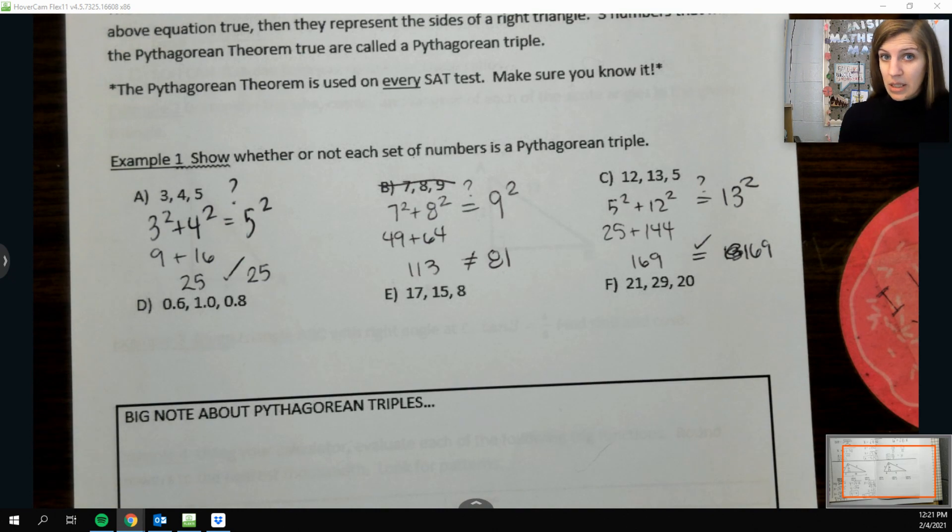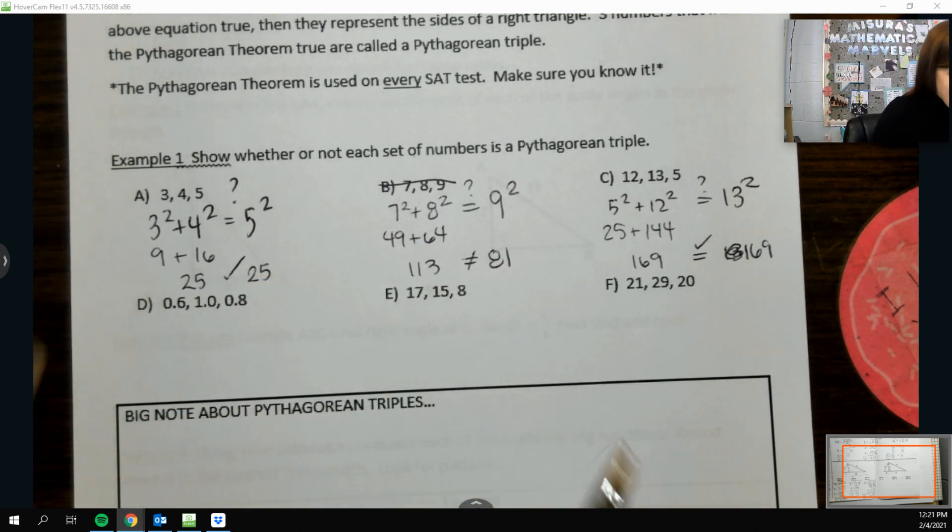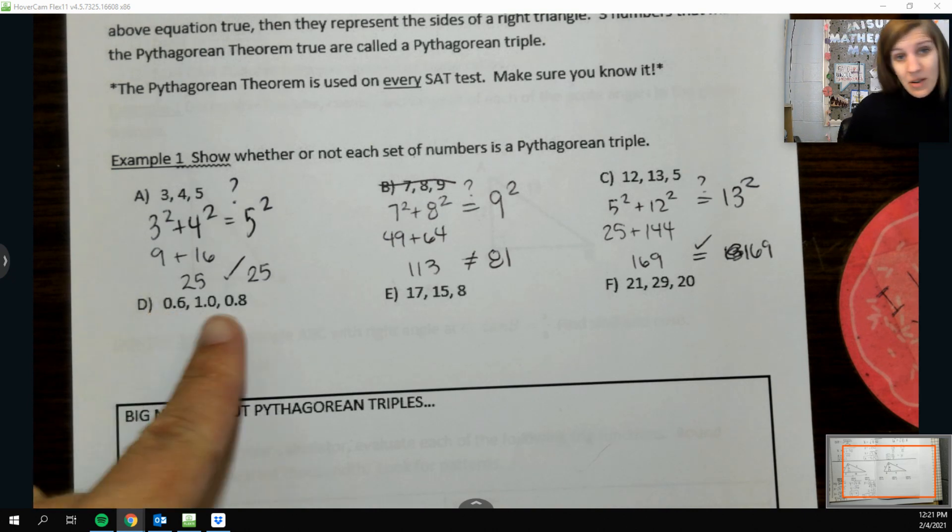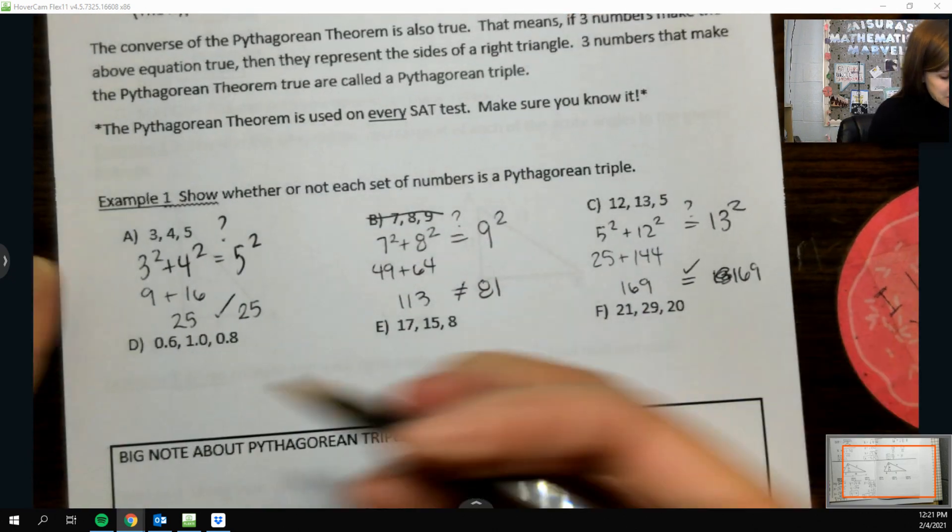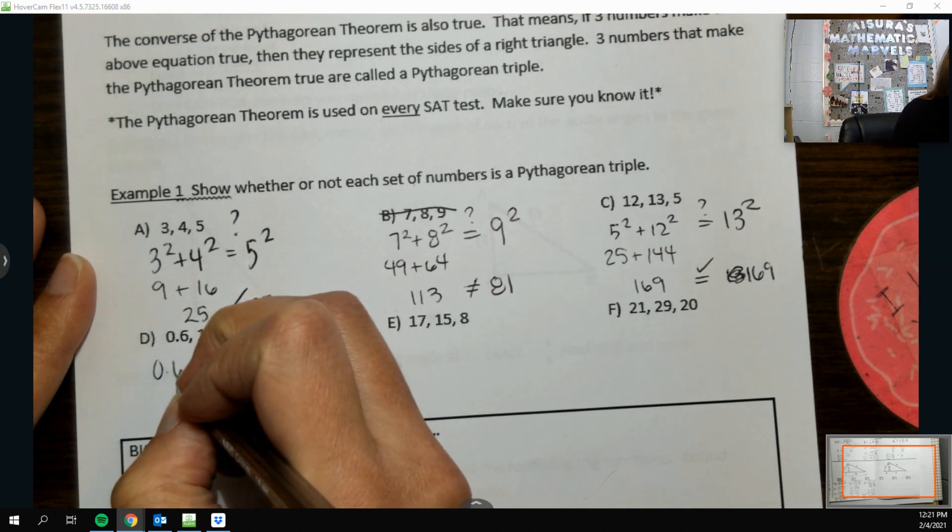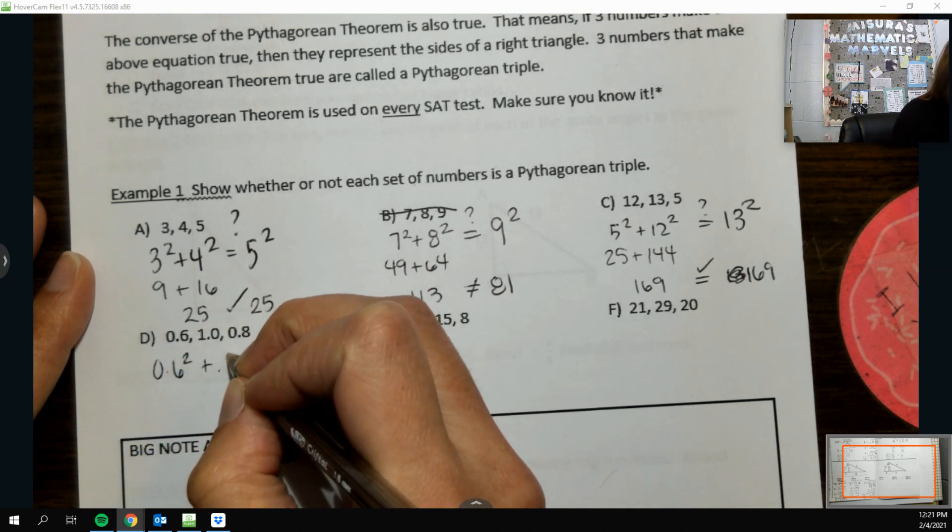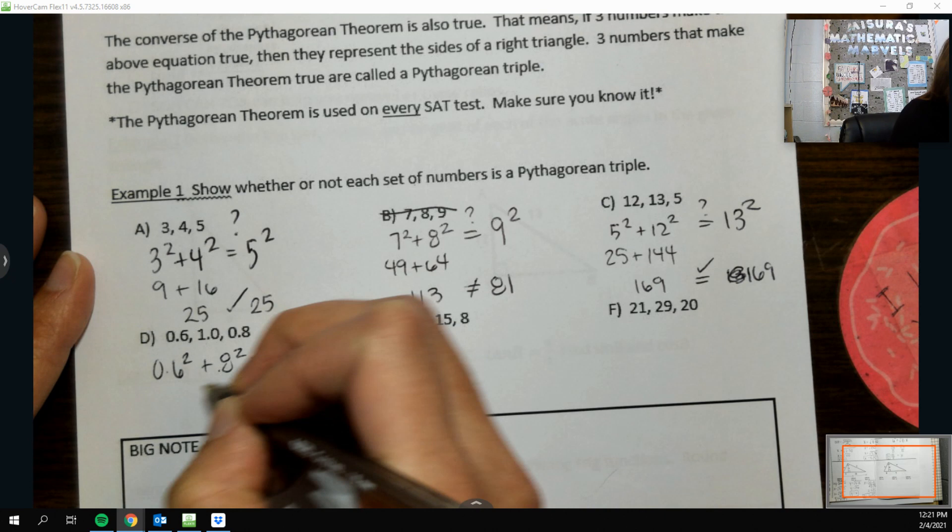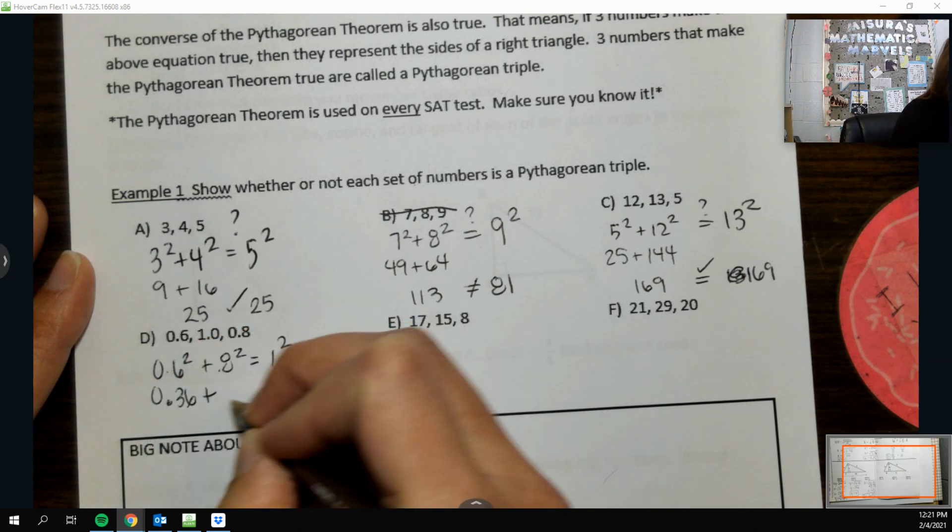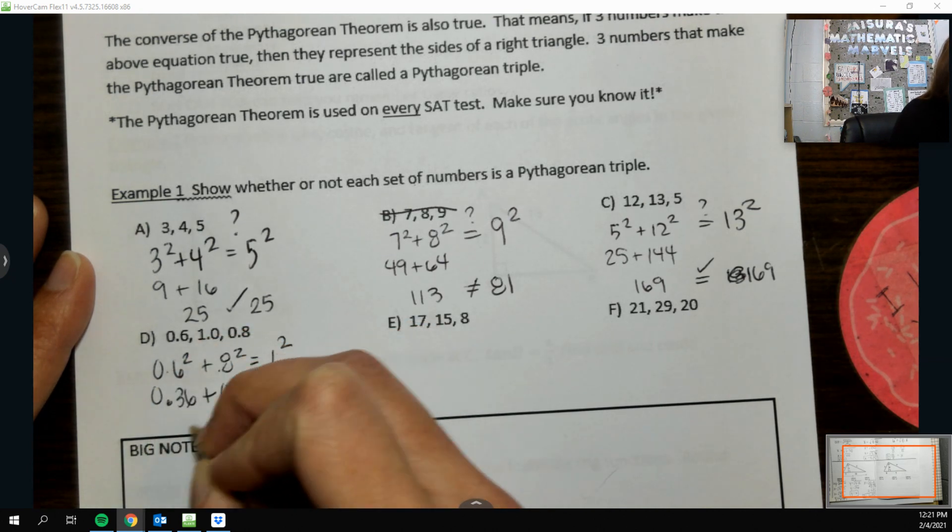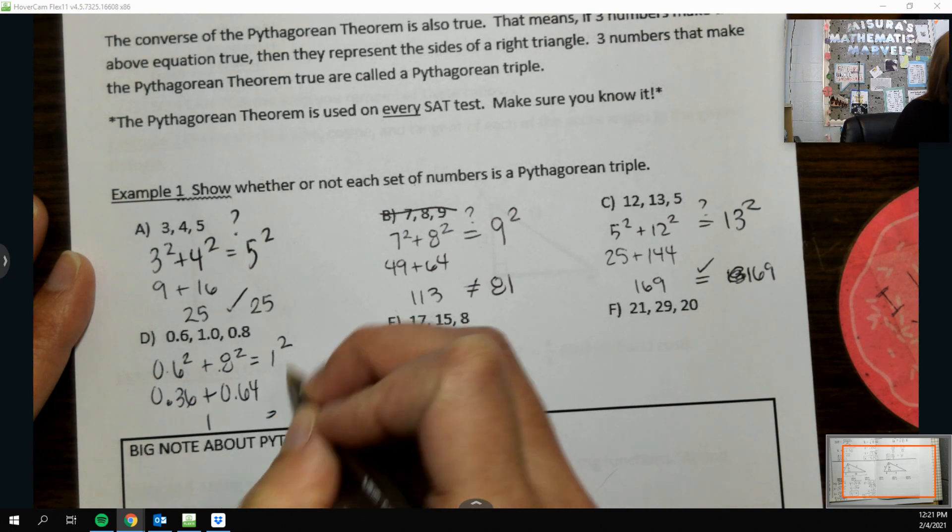If you know anything about me, you know that I do not like decimals. But the funny thing is, I don't see those as decimals. I see 6, 8, and 10. And I already told you that 6, 8, and 10 was a Pythagorean triple. So I already know this is. But we could do 0.6 squared plus 0.8 squared. Does it equal 1 squared? Well, 0.6 squared is 0.36. 0.8 squared is 0.64. And when I add those up, that's 1. And 1 squared is 1.